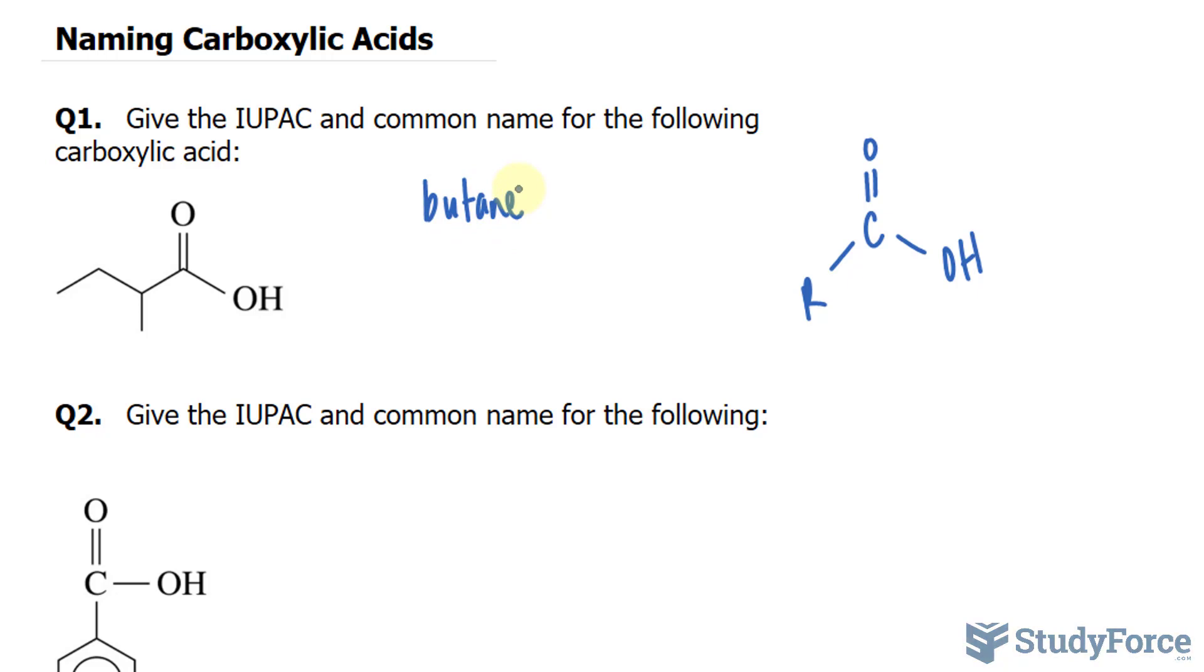Except we know that it's a carboxylic acid, so we drop this E and we replace it with OIC. So we have butanoic acid. That's the IUPAC name.